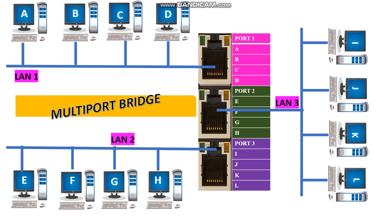If you observe here, the first table contains port number 1 and all the stations attached to port number 1. The second table contains port number 2 and all the stations attached to port number 2. The third table contains port number 3 and all the stations attached to port number 3. The next type of bridge is transparent bridge.